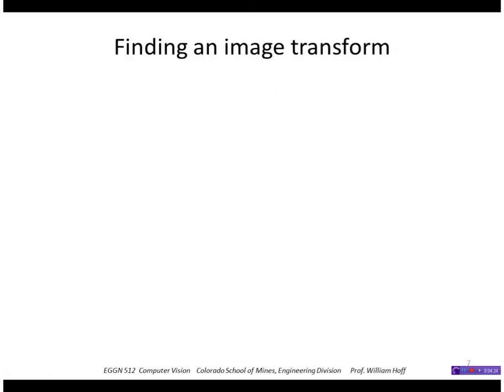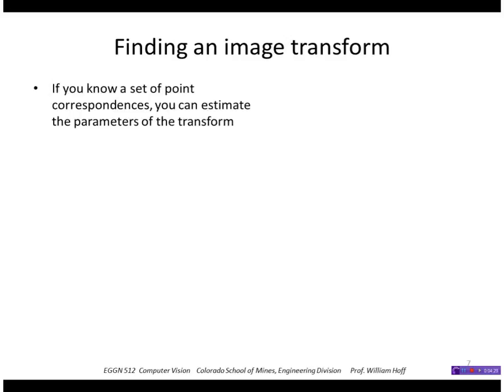Okay, let's look at how to apply least squares to finding an image transform. So we have two images, we want to find a transformation between them to map one onto the other. So if we have a set of point correspondences between the two images we can estimate the parameters of the transform.